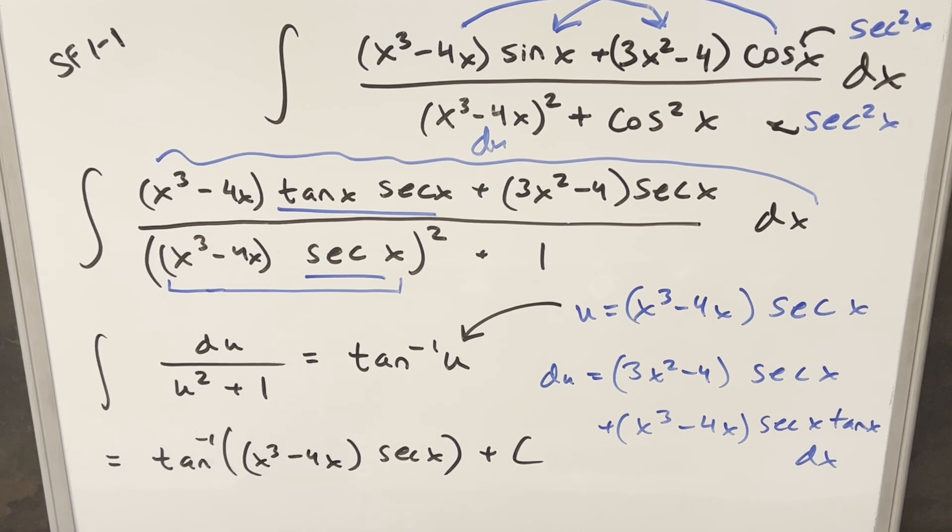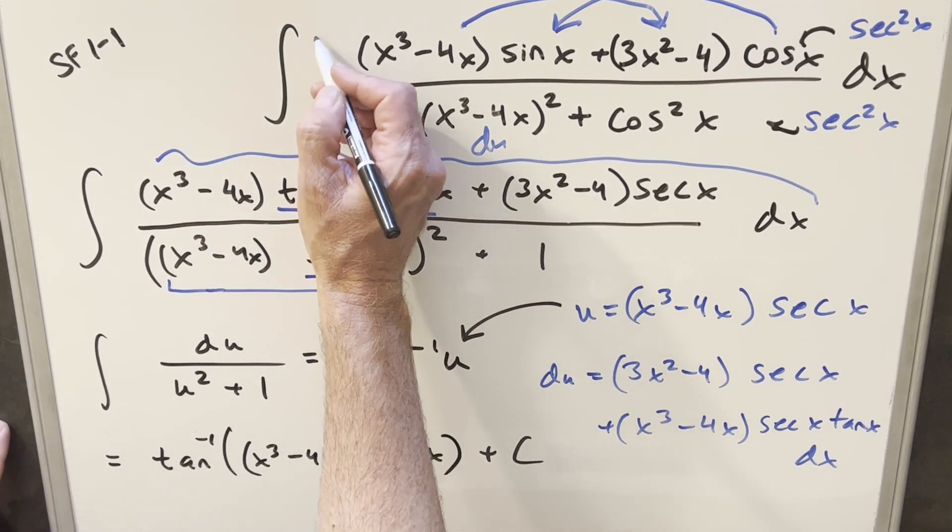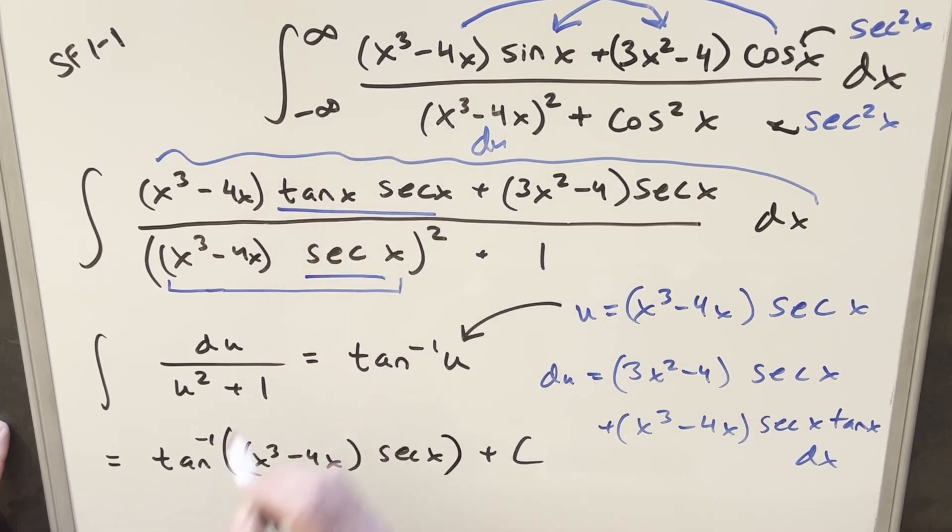Now, getting back to what we really want, though, this is nice, but we want this from minus infinity to infinity. Well, the trouble is, if I just go ahead with this and try to evaluate the bounds, in theory, we could do this and just evaluate from minus infinity to infinity. The problem we have now is there's a bunch of discontinuities because of the secant right here.